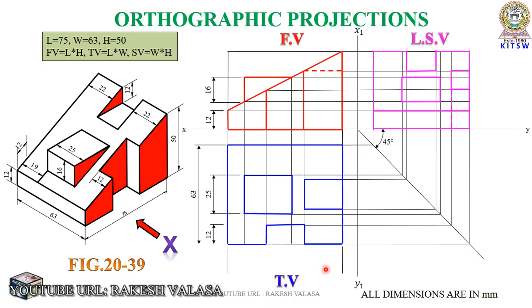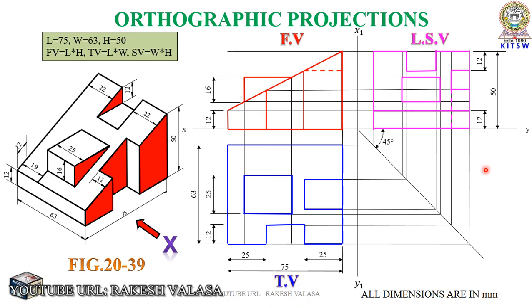After completion of the final front view, top view, and left side view, give dimensions for each view. The front view dimensions: height 16 mm, bottom height 12 mm. Top view dimensions: total width 63 mm, 12 mm, 25 mm, and bottom edge total length 75 mm — 25 mm on each side. Side view dimensions: total height 50 mm, bottom height 12 mm, top 12 mm. This is the final solution for the given object to draw the three views — front view, top view, and left side view. I hope this problem is very clear to everyone. Thank you for watching. Please like and subscribe to my channel for more updates.